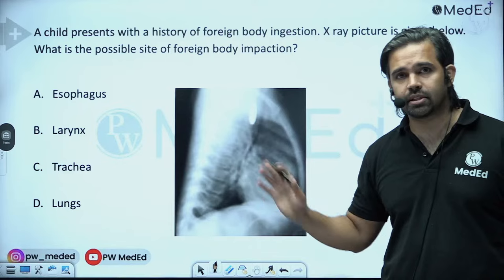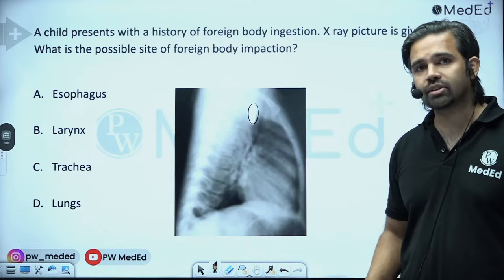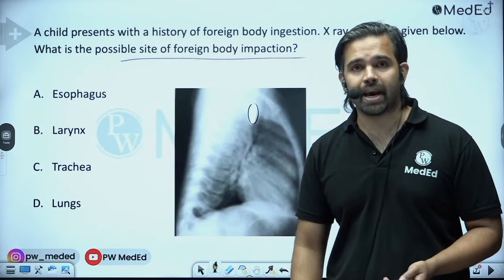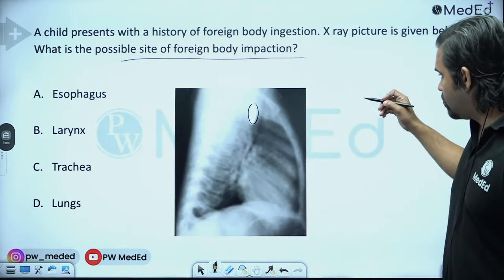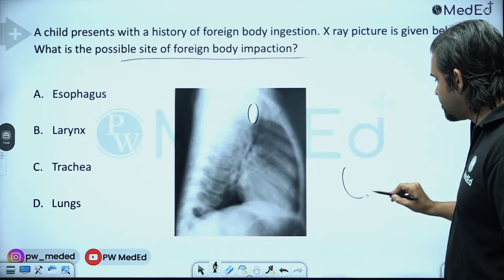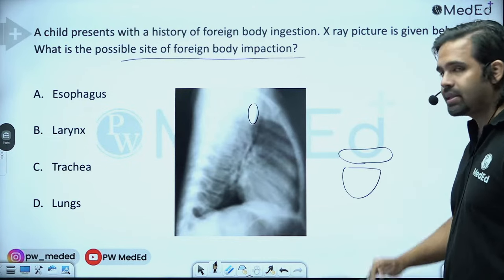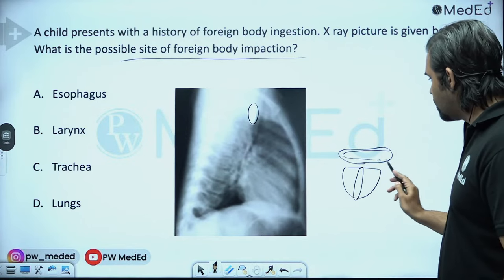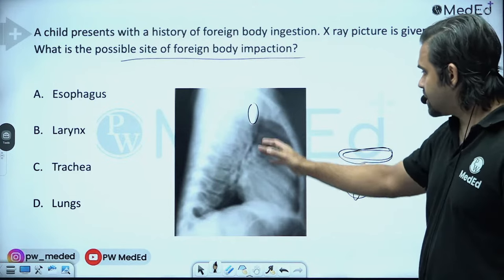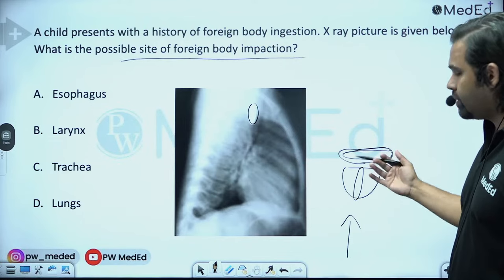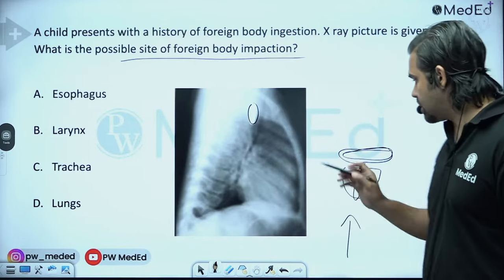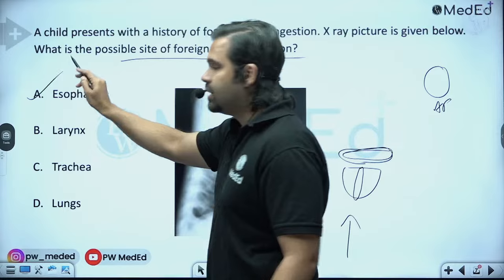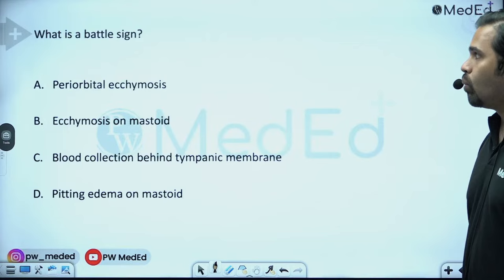This question has come at least four times in FMG: a coin is seen on X-ray, and they ask the site of foreign body impaction. The tracheal cartilage is C-shaped, and the esophagus behind it is collapsed. A coin in the trachea sits anteroposteriorly, while a coin in the esophagus sits laterally. On a PA X-ray, a coin in the esophagus appears as a circle; on a lateral view it appears edge-on. So the answer is esophagus.